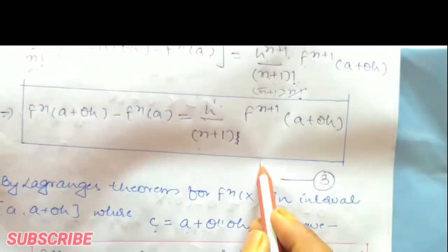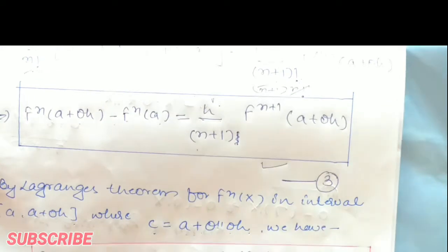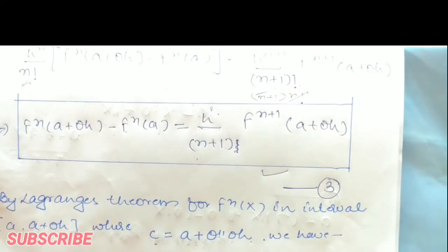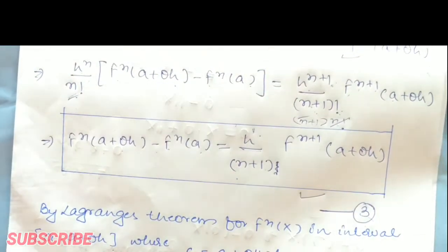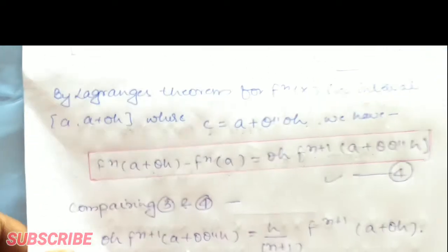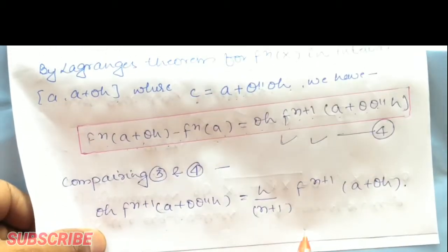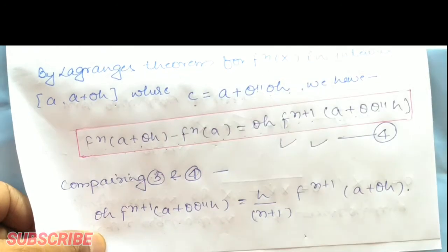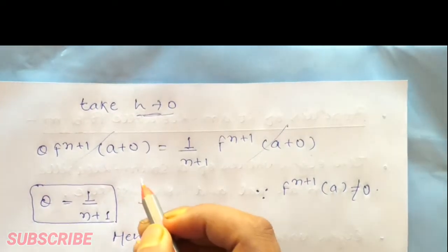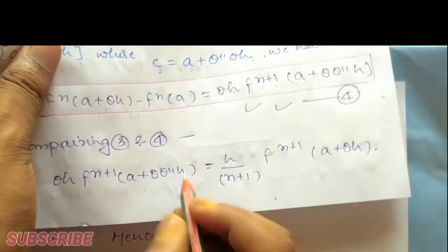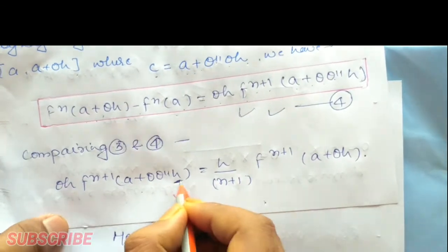Now compare equation 3 and equation 4 carefully — both represent the same thing. So the right-hand sides of equations 3 and 4 are equal. Now, as stated in the question, h is approaching 0, so we substitute h = 0.